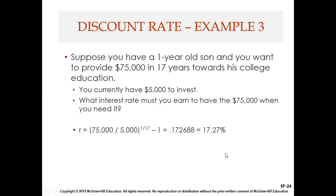Suppose you have a one-year-old son and want to provide $75,000 in 17 years for college. You currently have $5,000 to invest. What interest rate must you earn? Using the formula: (75,000 / 5,000)^(1/17) − 1. Compute 1/17 = 0.0588235294, then (15)^0.0588235294, subtract 1, and you get 17.27%. You can also use the TVM Solver for this calculation.